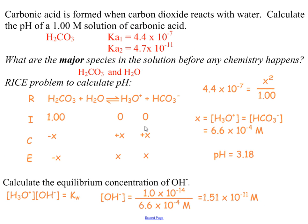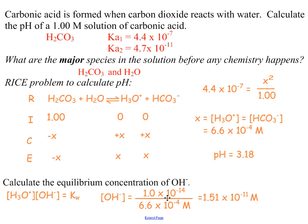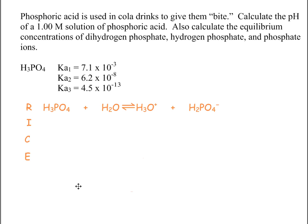All right. So what we've done is we've figured out the pH, the amount of H3O+, HCO3-, and carbonate. And at the same time, we could figure out hydroxide. Now it's your chance to try something similar with phosphoric acid. The only difference is now I have three Ka's, which means I'm going to need three RICE problems. Pause the video and see what you can come up with.